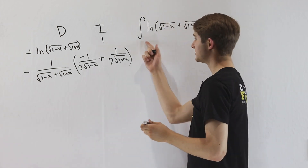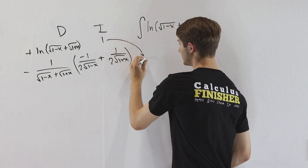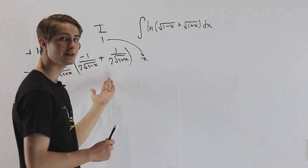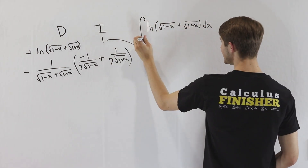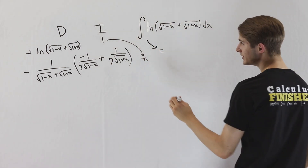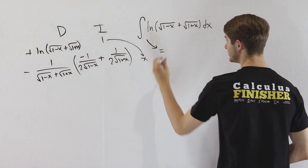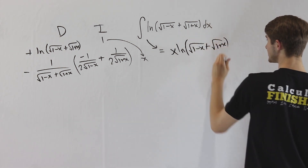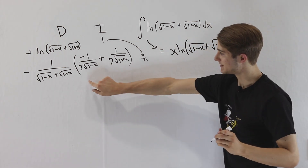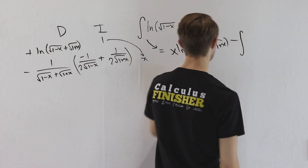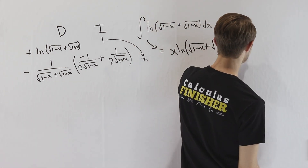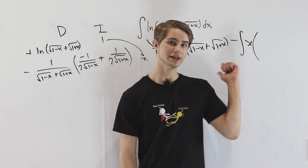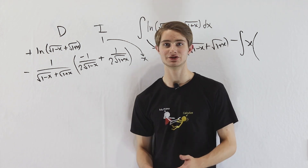We're going to integrate 1 because that's all we have left in our integral, and that gives us x when we integrate it. So, the integration by parts result is: x times the natural log of the square root of 1 minus x plus the square root of 1 plus x, minus the integral of x times all of the stuff we just differentiated. Before we plug that in, let's see if we can simplify the derivative expression to make it easier to deal with.